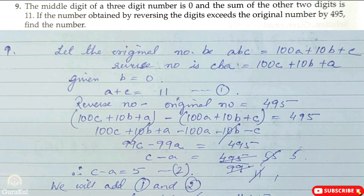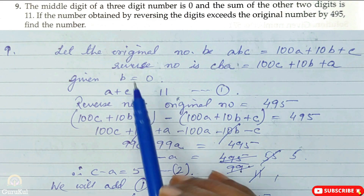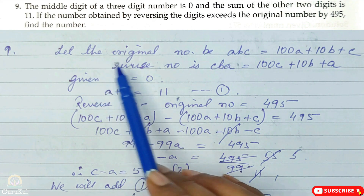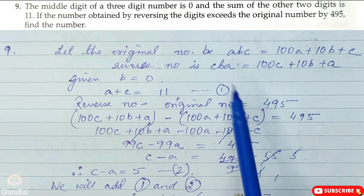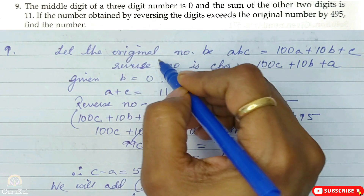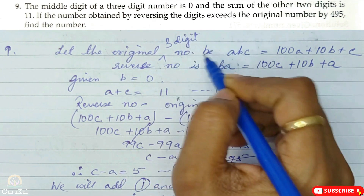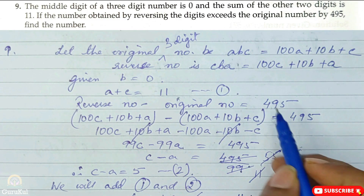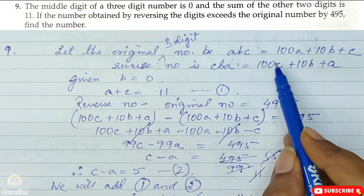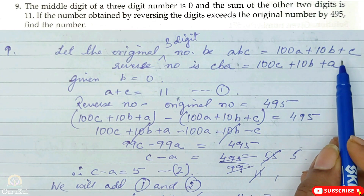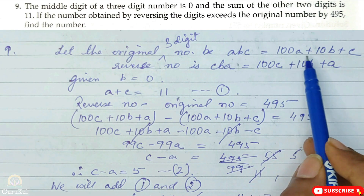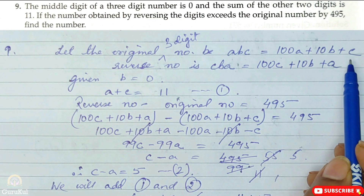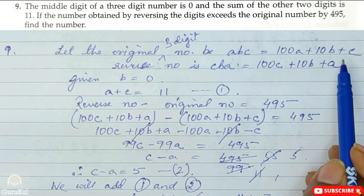Question number 9: the middle digit of a three-digit number is 0. Let the original three-digit number be A, B, C. In generalized form, the original number is 100A plus 10B plus C.